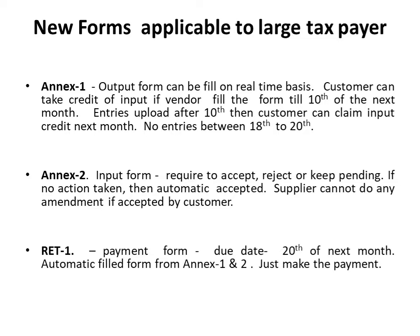Annexure 2 is an input form where the taxpayer is required to accept, reject, or keep pending. Please note, if no action is taken, then it is automatically going to be accepted. The supplier cannot do any amendment if it has been accepted by the customer. It is very important that what we are accepting or what input we are claiming should be reconciled with our books.